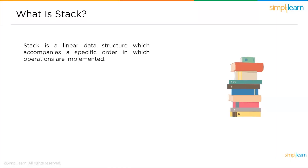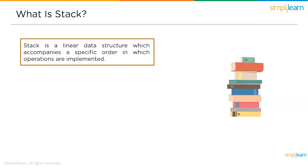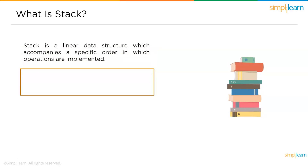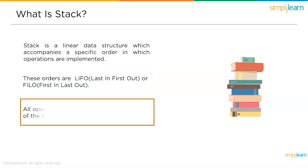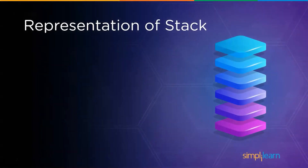Stack is a linear data structure, just like arrays and linked lists. The difference is that it follows a specific order when an operation is performed on it — that is LIFO: Last In First Out, or FILO: First In Last Out. All operations can be done only at one end of the stack, that is the top.